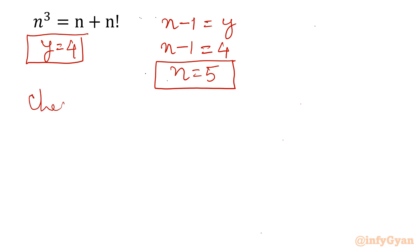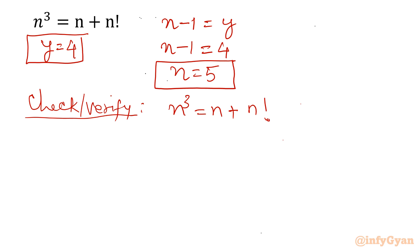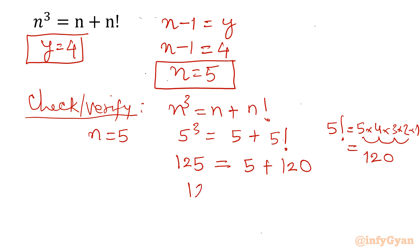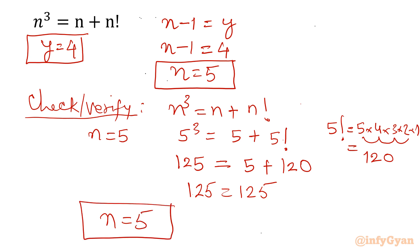Let us verify by checking the original equation n cubed equals n plus n factorial with n equals 5. We get 5 cubed equals 5 plus 5 factorial. 5 cubed is 125, and 5 factorial is 5 times 4 times 3 times 2 times 1 equals 120, so 5 plus 120 equals 125. Therefore n equals 5 is confirmed as the correct answer. Thank you so much for watching — please subscribe to the channel!